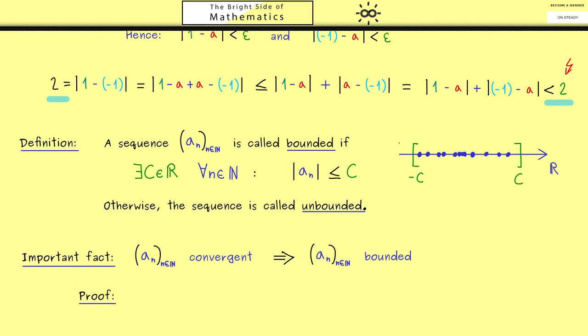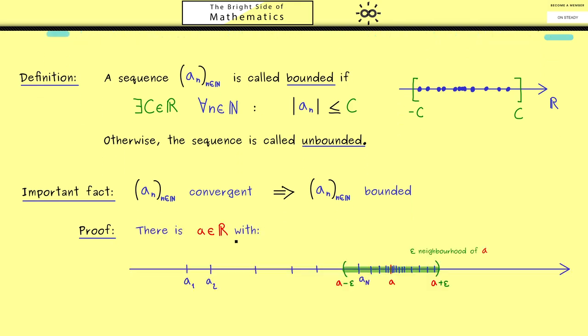For this just recall again the definition of convergence. So you know there exists a limit we call a such that we have something we can visualize with this picture here. We have that almost all points lie in the epsilon neighborhood around a. Therefore to get something like in the picture above we simply have to define c or -c to be a plus epsilon, or to be the member that is the farthest away from this epsilon neighborhood. To put it into a formula we just define c to be the maximum out of these finitely many numbers.